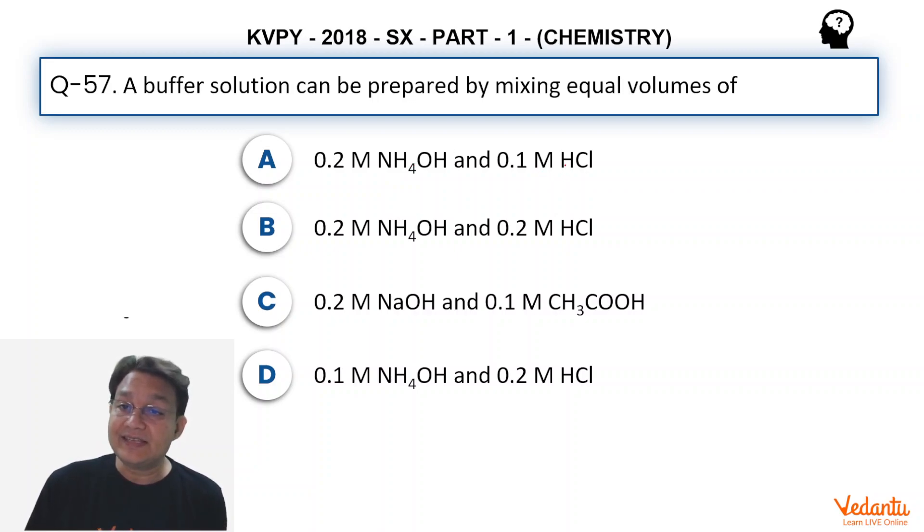Since HCl is less in amount, if we react them then the reaction between them can be represented as NH4OH plus HCl changing into NH4+ plus Cl-. This is 0.2, this is 0.1. So the limiting reagent is HCl.